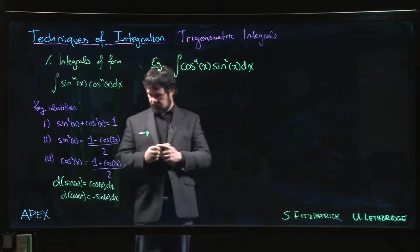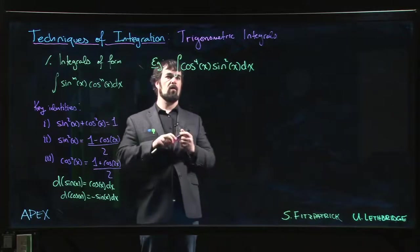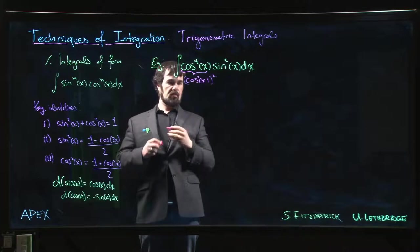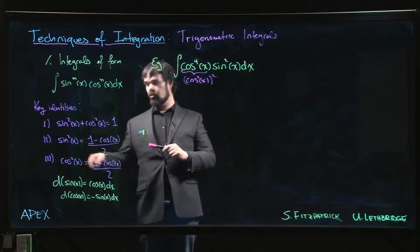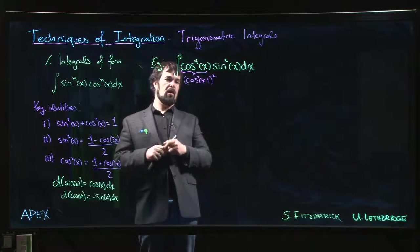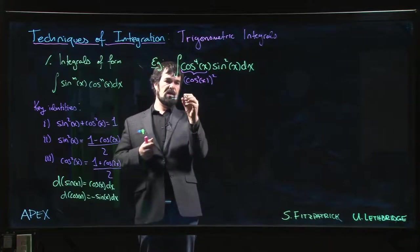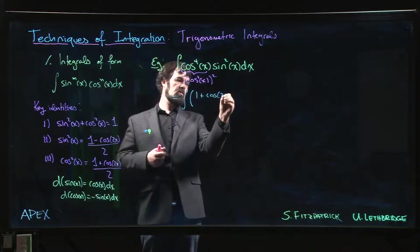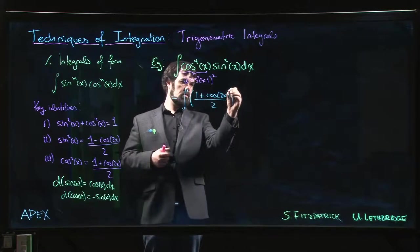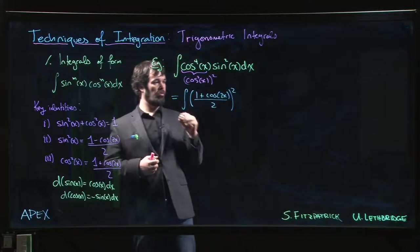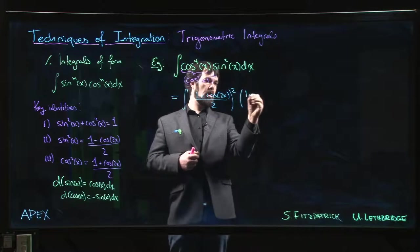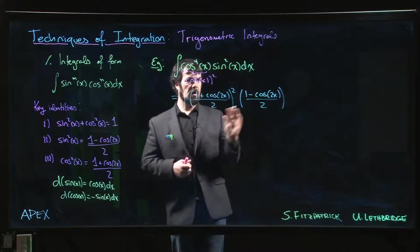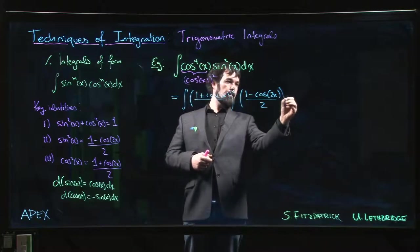So what we need to do is realize that cos to the four is cos squared x squared, and we have to do these substitutions for actually both sine and cosine. You're never going to get away with a simple u substitution for these. So here we get 1 plus cos 2x over 2, that whole thing is squared. And then we have 1 minus cos 2x over 2, not squared because we just have that one once, dx.